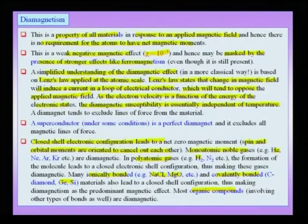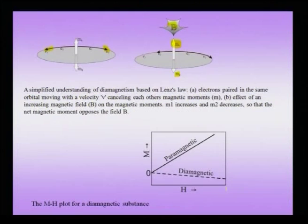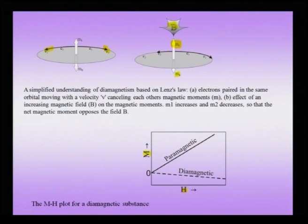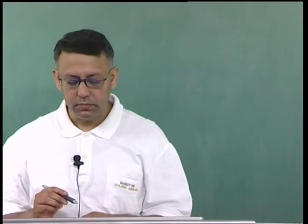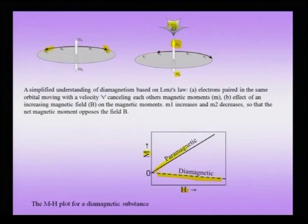Since we will not discuss the diamagnetic effect in nanomaterials in detail, we note it is a ubiquitous effect found in all materials, with a negative and small susceptibility slope. Later we will compare this with paramagnetic susceptibility, which has a slightly larger and positive value.